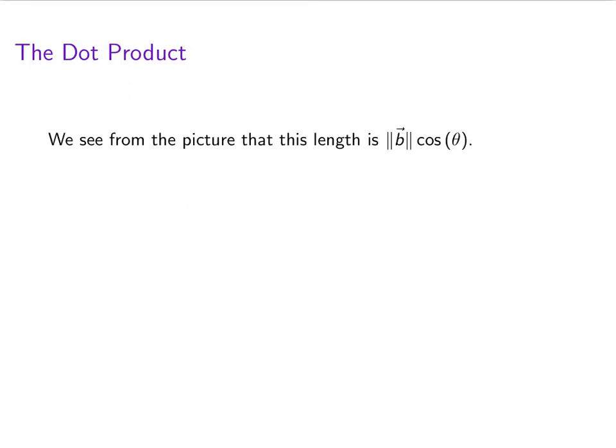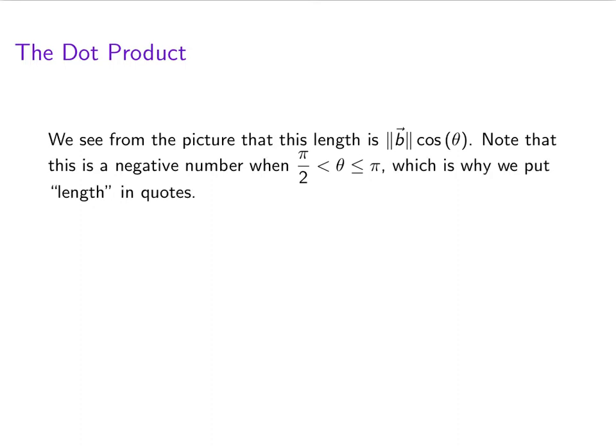From the picture, we can see that the length is ||B|| cos(θ). But notice that this is a negative number when θ is strictly bigger than π/2, or less than or equal to π. So, that's why we put length in quotes.